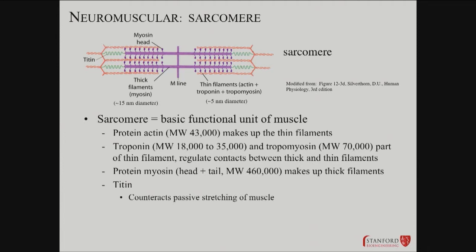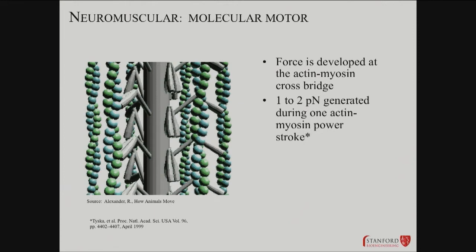You've got this actin and multiple myosin component system. The protein actin — about a 43 kilodalton protein — constitutes the so-called thin filaments, which are actin plus a couple of calcium sensors: troponin and tropomyosin. Then you've got an array of other very large proteins, including this interesting spring-like protein called titin, one of the biggest proteins in the body. It acts as a damper, counteracting passive stretching of muscle. But the actual force — the power stroke — is generated at the actin-myosin linkage.